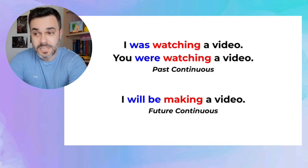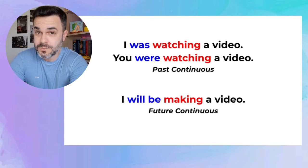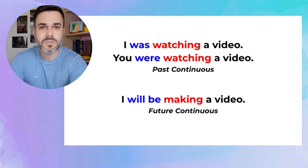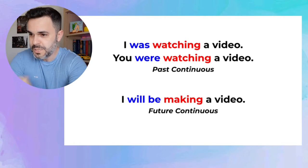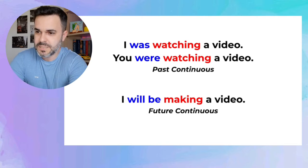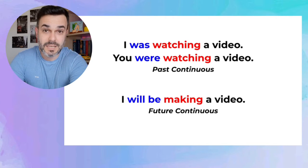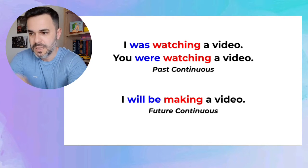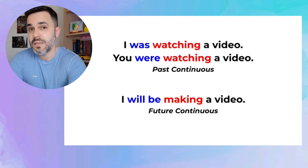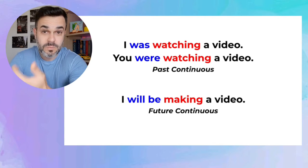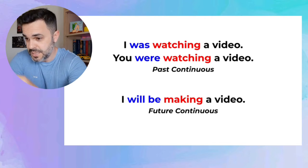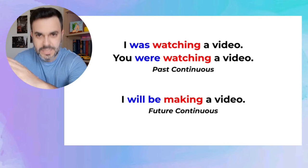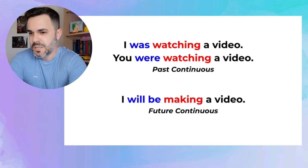And for continuous actions in the future, use the future continuous: verb 'to be' in the future — will be — plus main verb plus ING. For example: making. I will be making a video. If you want me to make a video specifically about the continuous tenses with more details and examples, please let me know in the comments.